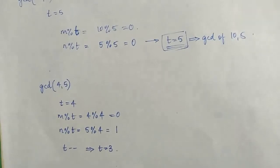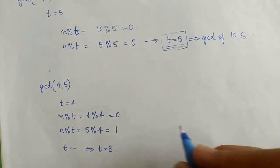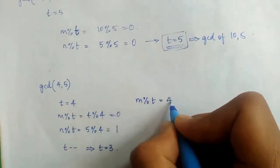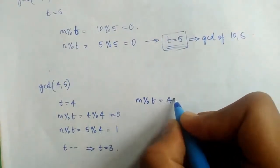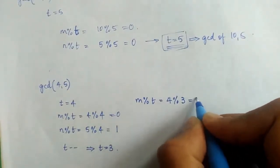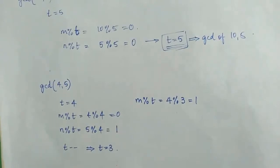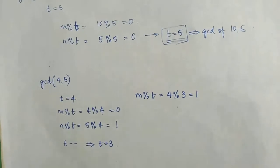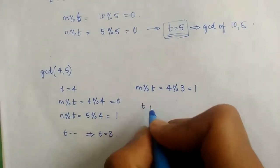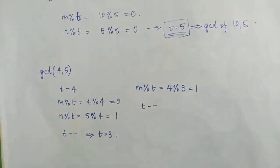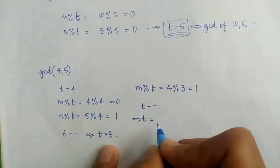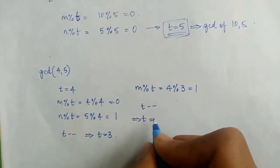We go back to the second step and perform m mod t. m is still equal to 4 and t is now equal to 3, so 4 mod 3 equals 1. Since it is not equal to 0 we go directly to the fourth step and decrement t by 1. Now t becomes equal to 2.